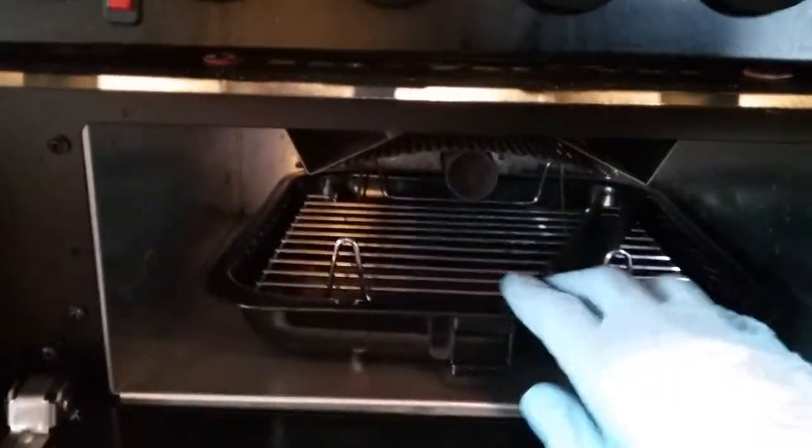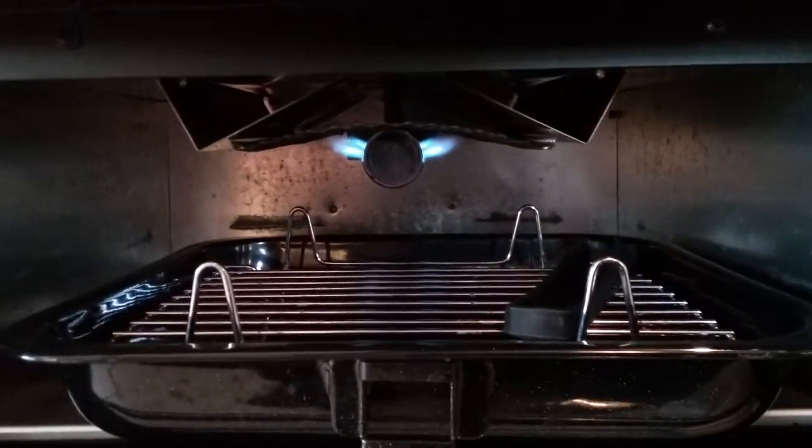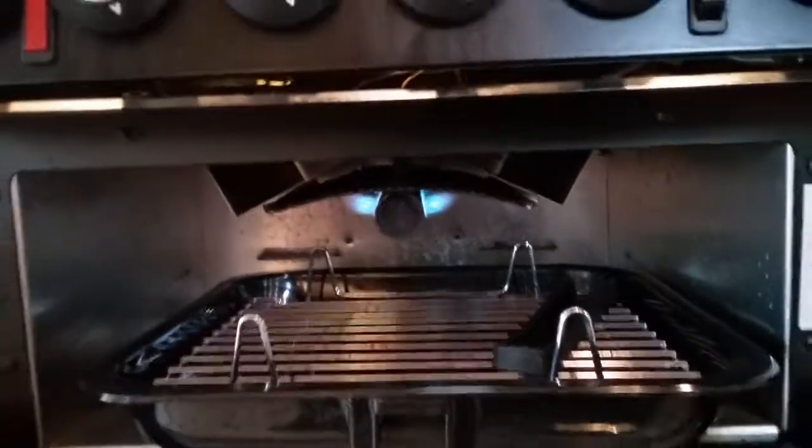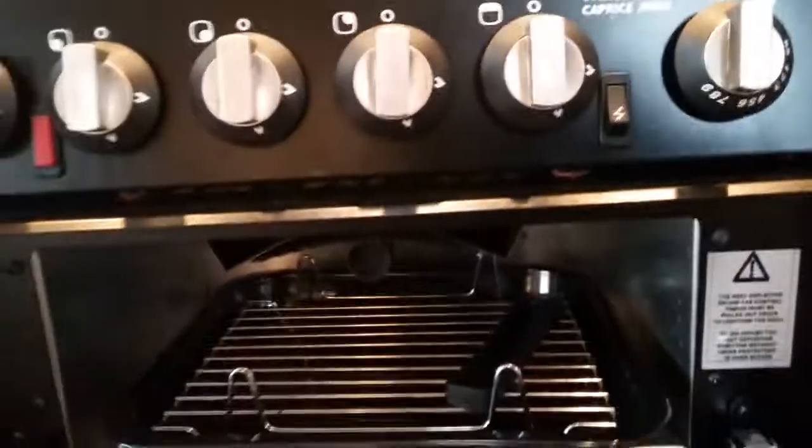And then beneath that we have the grill. Again just push in, twist and press the igniter. And then the oven beneath this.